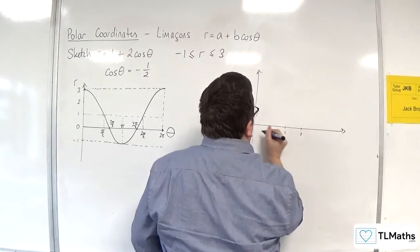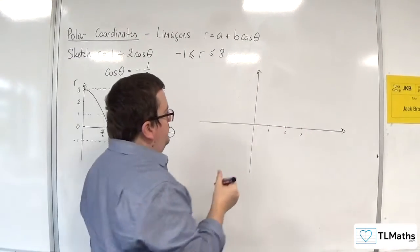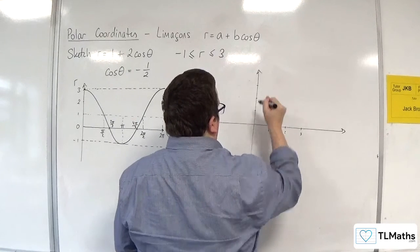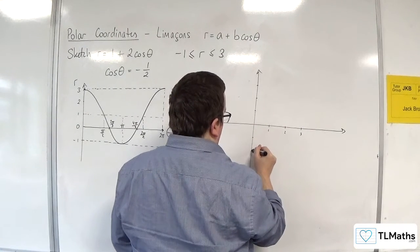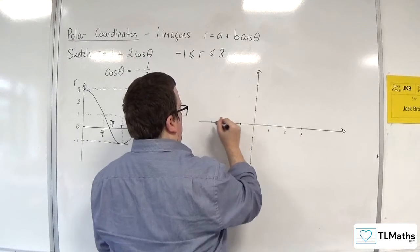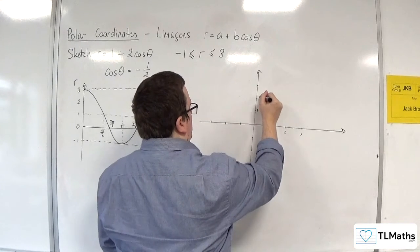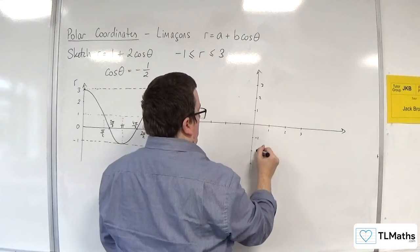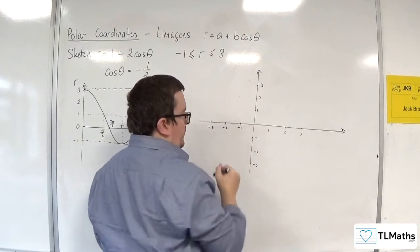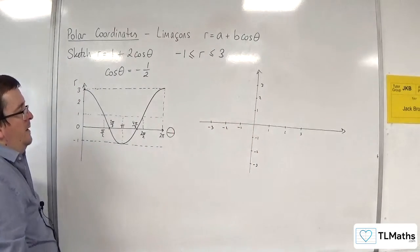And let's do the same here. So 1, 2, 3. 1, 2, 3. 1, 2, 3. So 1, 2, 3. Minus 1, minus 2, minus 3. Minus 1, minus 2, minus 3.